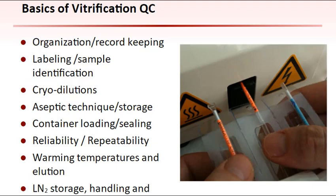Reliability and repeatability: is the vitrification system simple and easily repeatable in its daily application among all technicians? Can embryos and oocytes be consistently recovered without a risk of loss? Warming temperatures: is the warming potential of the device compatible with the vitrification solution used to ensure optimum survival and developmental competence? Liquid nitrogen storage, handling, and shipment: because of the potential adverse effects of uncontrolled, suboptimal warming of vitrification microdevices, the ability to maintain specimens below minus 150 degrees Celsius during storage, identification, verification, and possible shipping and receiving is of paramount importance.